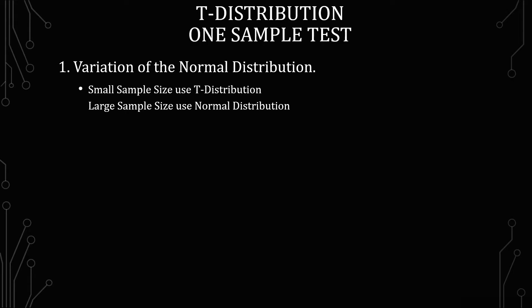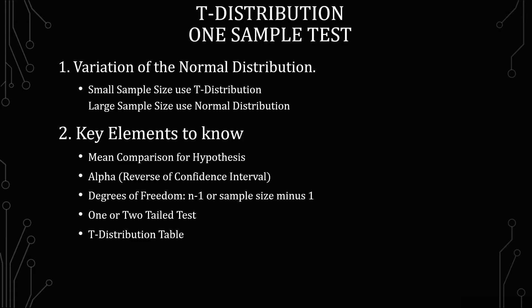Some key elements to know are your mean comparison for your hypothesis, so what your hypothesis is comparing itself to. The alpha, which is the reverse of the confidence interval, so if you're looking at a 95% confidence interval, your alpha is 0.05. Degrees of freedom is n-1, or the sample size minus 1. This is to help with the variation aspect of the t-distribution and a small sample size.